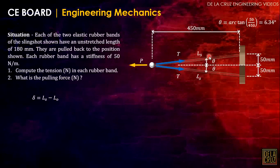Now calculating the deflection on each rubber band, that is Ls minus the original length, which is 180 millimeters. As you can see, Ls can be solved by Pythagorean theorem. We can have the square root of 450 squared plus 50 squared minus the original length 180. So the elongation of each cable is 272.77 millimeters.